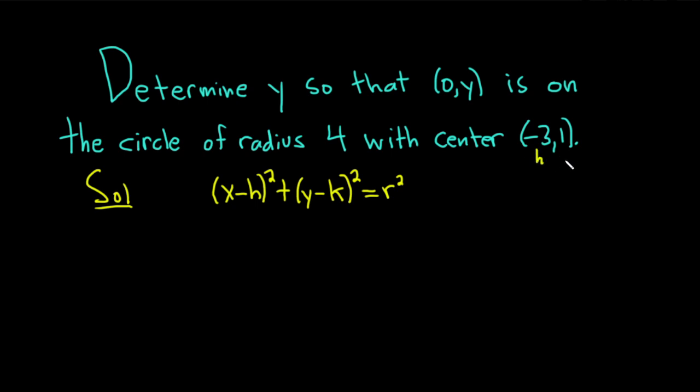So h is -3 and k is 1. This will be (x - (-3))² + (y - 1)² = 4². So basically just plugging in h, k, and r to get our equation of the circle, which equals 16.